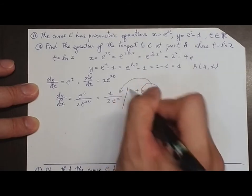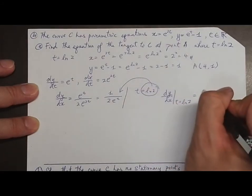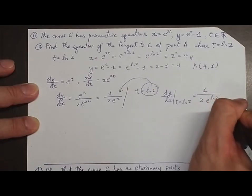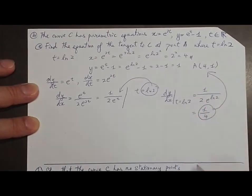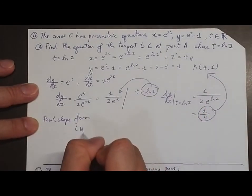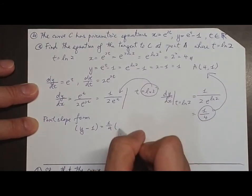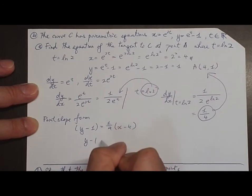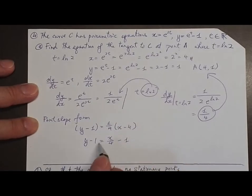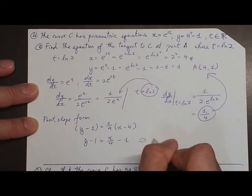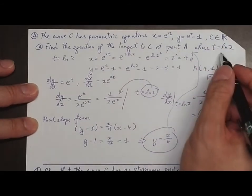When t equals ln 2, we substitute ln 2 into the equation. dy/dx equals 1 over 2e^(ln 2) equals 1/4. This is the slope of the tangent at point A. By the point-slope form, y minus 1 equals (1/4)(x minus 4). Simplifying: y equals x/4. This is the equation of the tangent of the curve at point A where t equals ln 2.